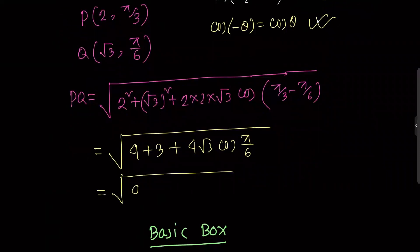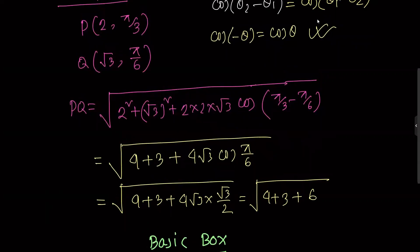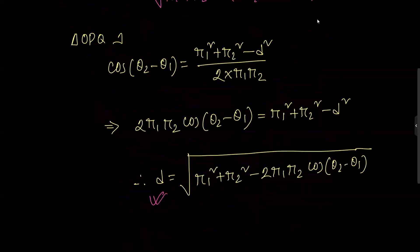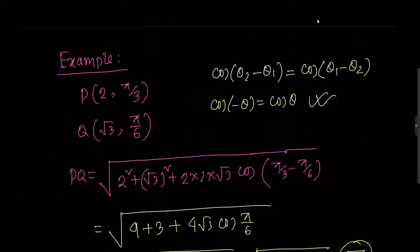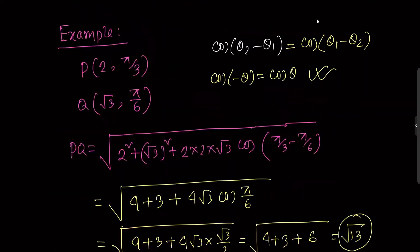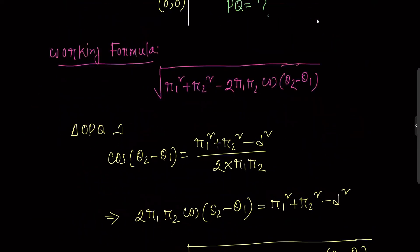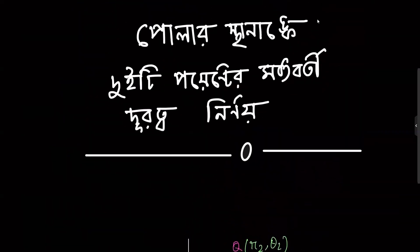The answer is root over 4 plus 3 plus 4 root 3 into cosine pi by 6, which is root 3 by 2. This simplifies to root over 4 plus 3 plus 6, which equals root 13. So this is how you apply the formula. I hope you understood the concept. See you soon.